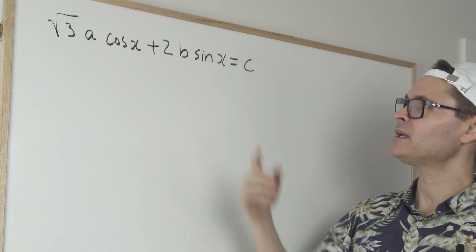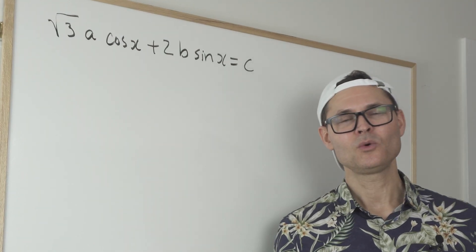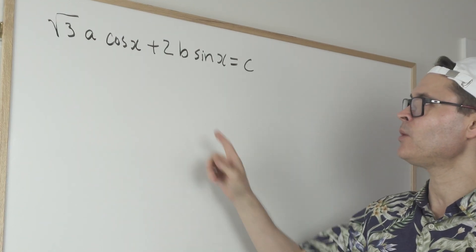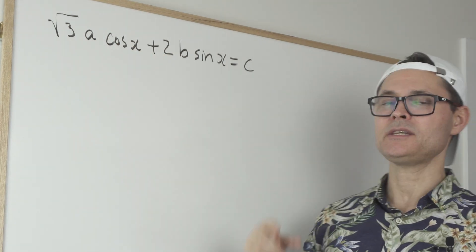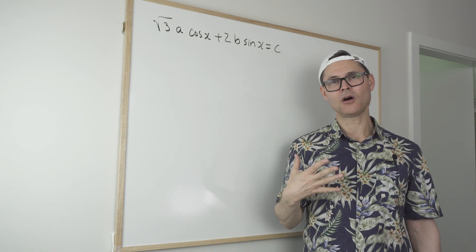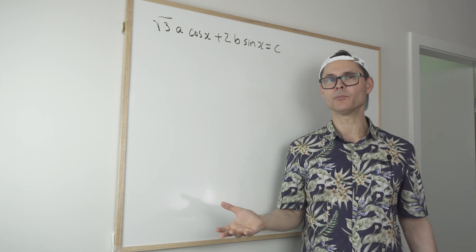This one has a bit of trig in it. It's a single equation. What they're doing is they're giving us an equation that has a cosine and a sine in it, and it also has A, B, and C. And A, B, and C are all non-zero real numbers.